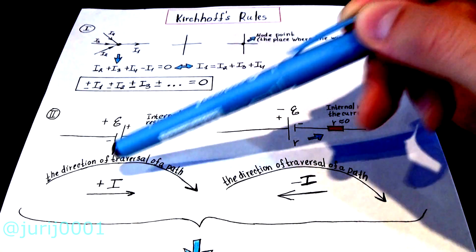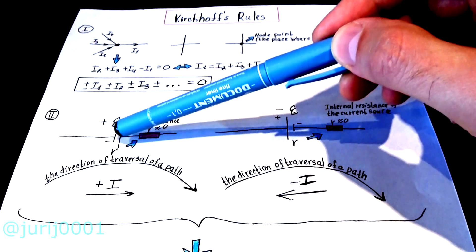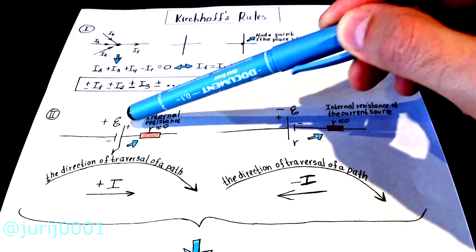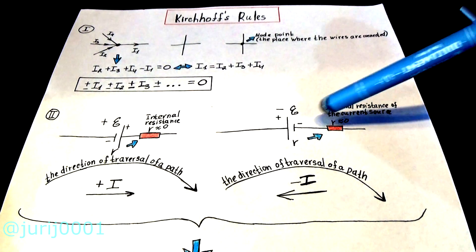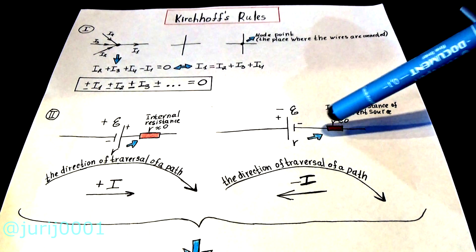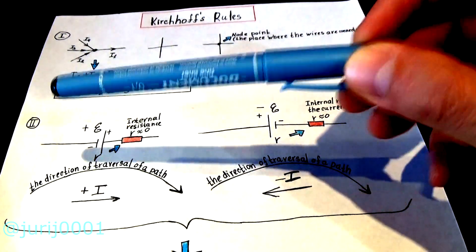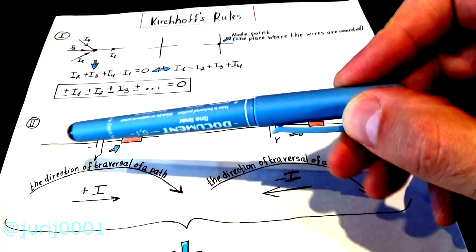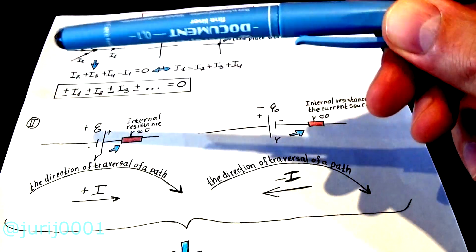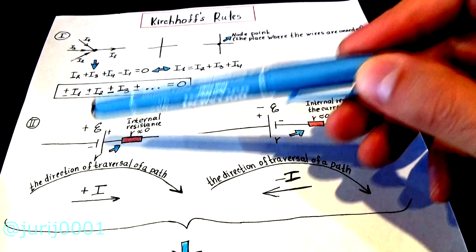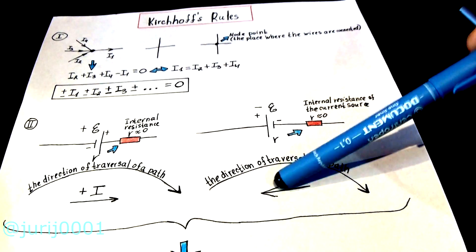Going in that direction, you sort of go uphill and put a plus sign. If you are going downhill in the direction of the contour bypass, then you put a minus sign. If the direction of current in the loop coincides with the direction of the loop bypass, then you put a plus sign; otherwise you put a minus sign.